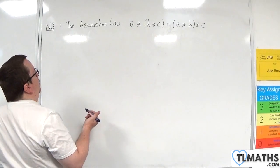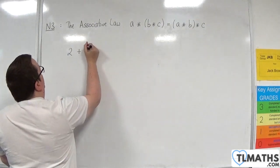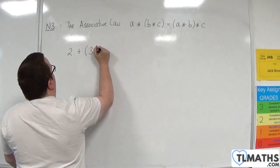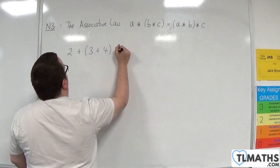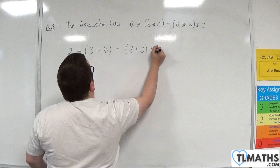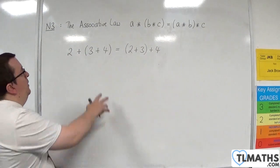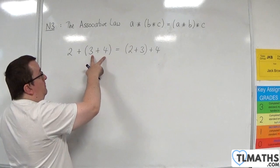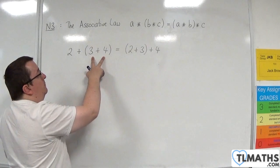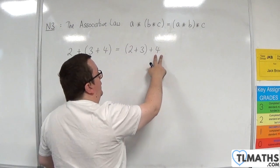So the first example we might try is 2 plus 3 plus 4. Is that the same as 2 plus 3 plus 4? Now, 3 plus 4 is 7. 2 plus 7 is 9. 2 plus 3 is 5. 5 plus 4 is 9.